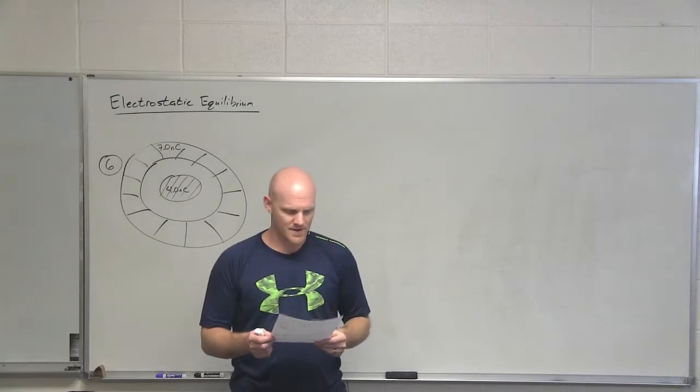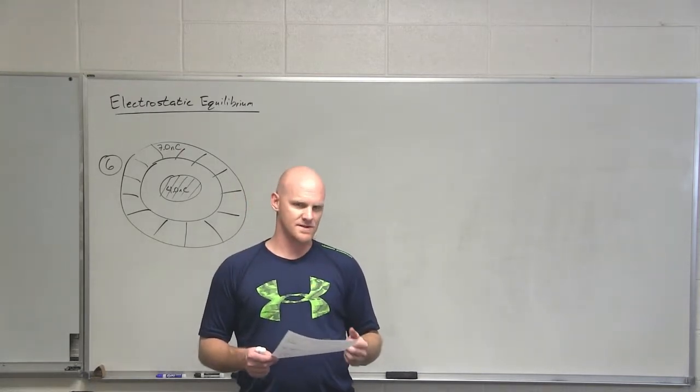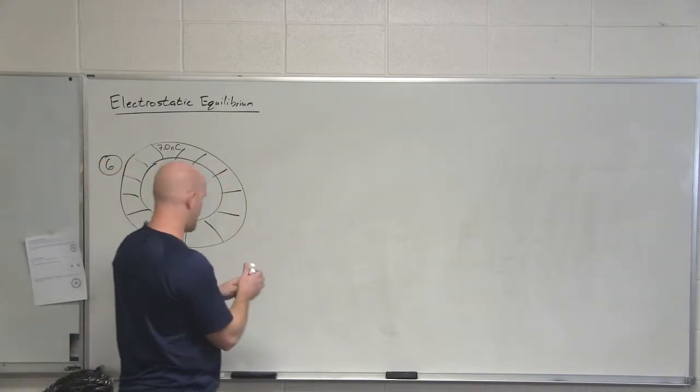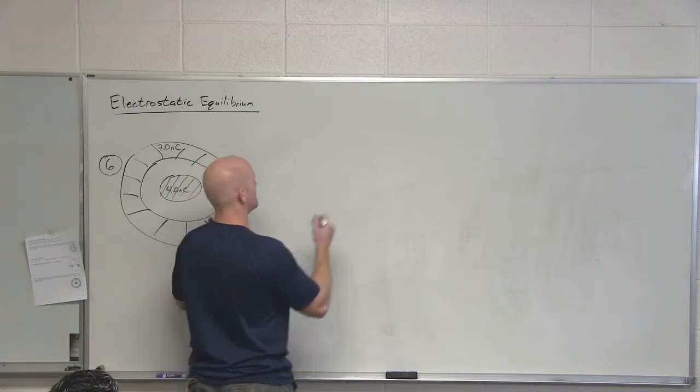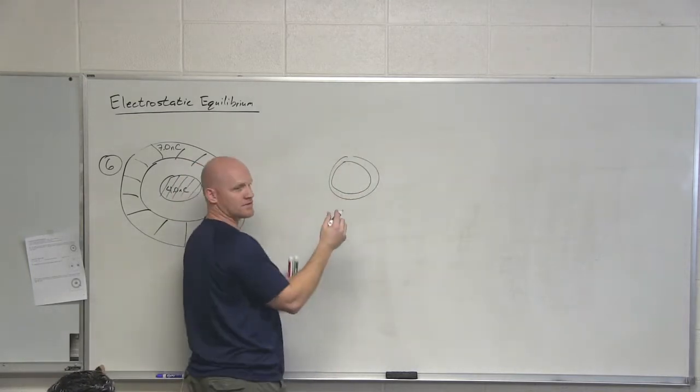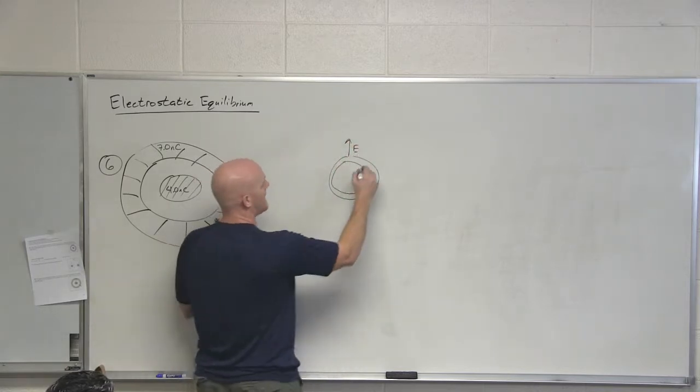The third property: electric field lines outside a conductor are perpendicular to its surface. You can kind of see why this would be. If I had a hollow sphere, notice the electric field lines coming off this are going to be perpendicular to the surface at every single point.